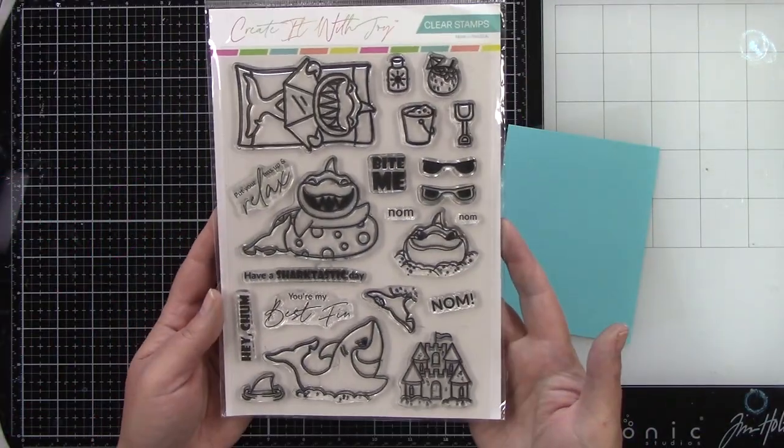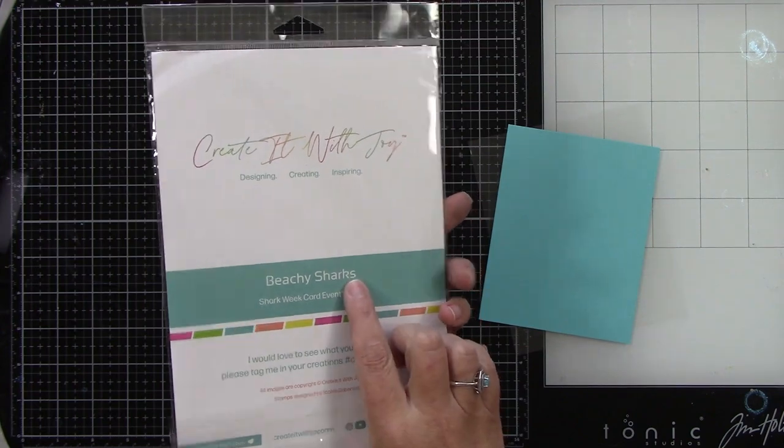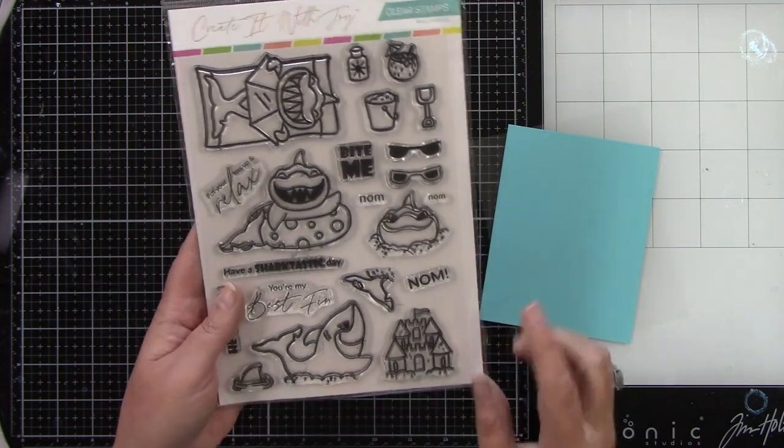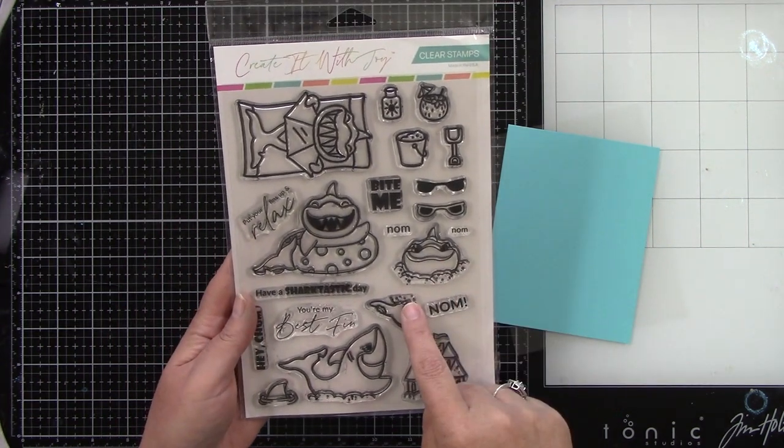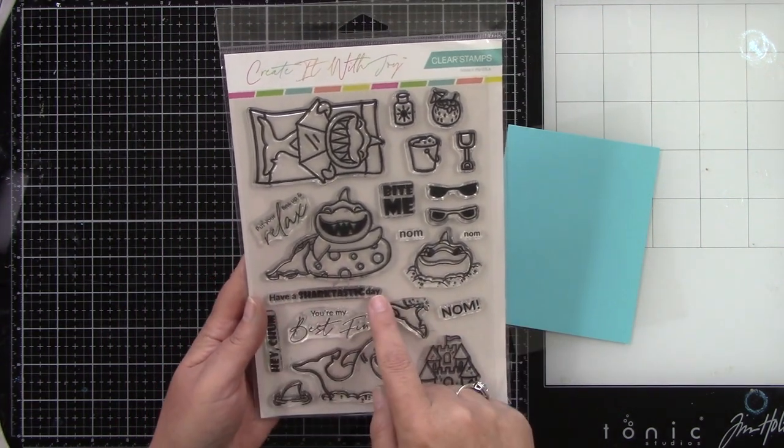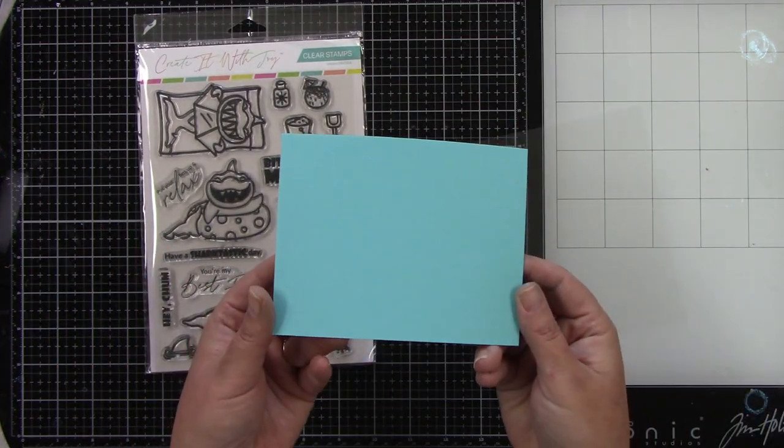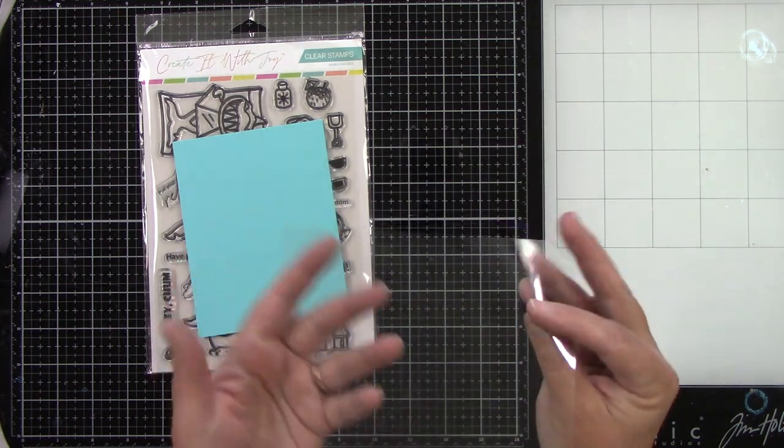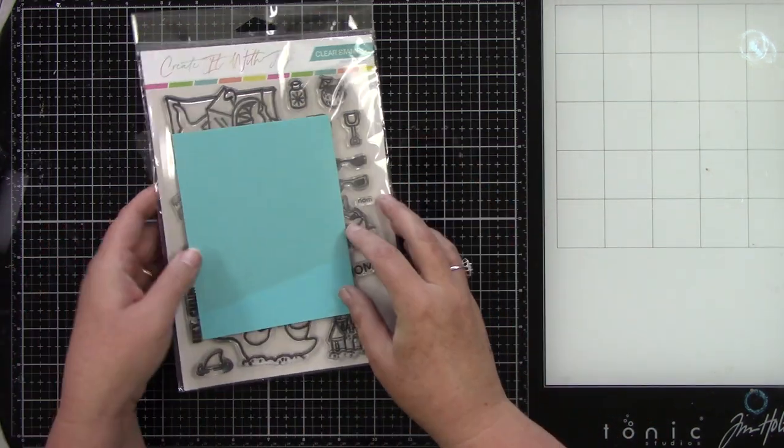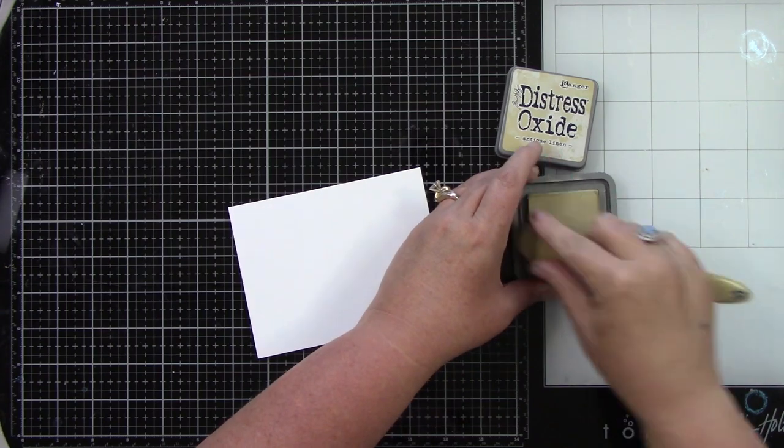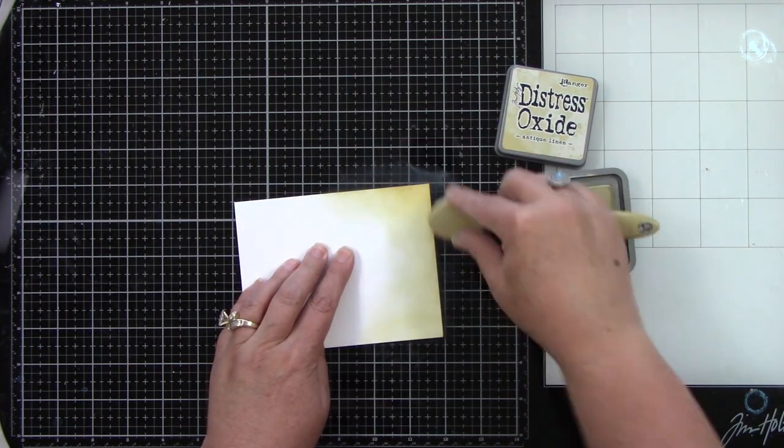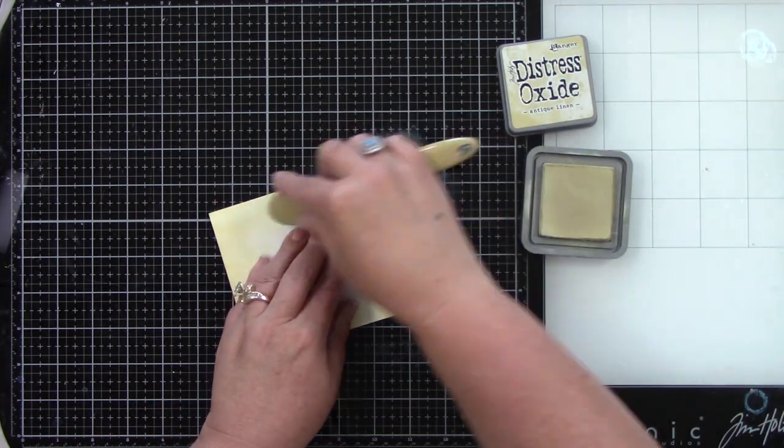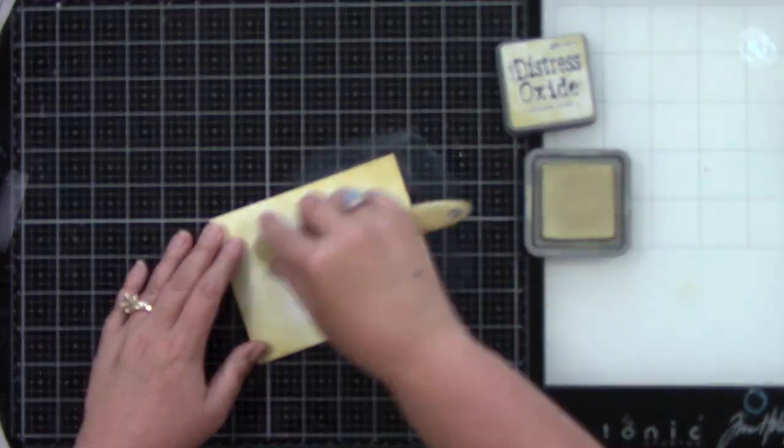From the card kit, I'm using the 6x8 Beachy Sharks stamp set. Look at how great this is! There's so many fun things going on in here. We're going to use the little shark that's buried in the sand, the bucket, the pail, and a sentiment. Also from the card kit, I'm using turquoise cardstock and a piece of acetate. I'm going to use it on this card, but we will be using that acetate for a project on August 5th at 11 a.m. Pacific time on my YouTube channel.